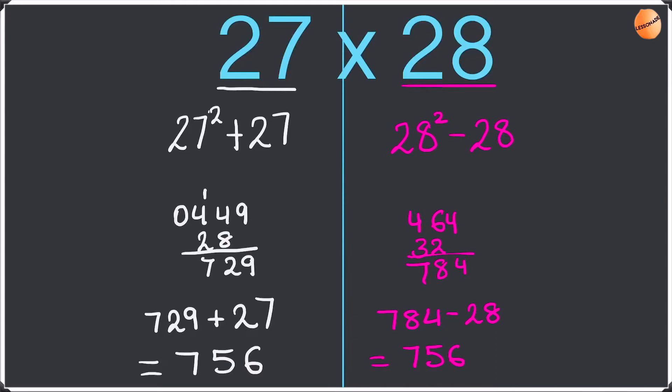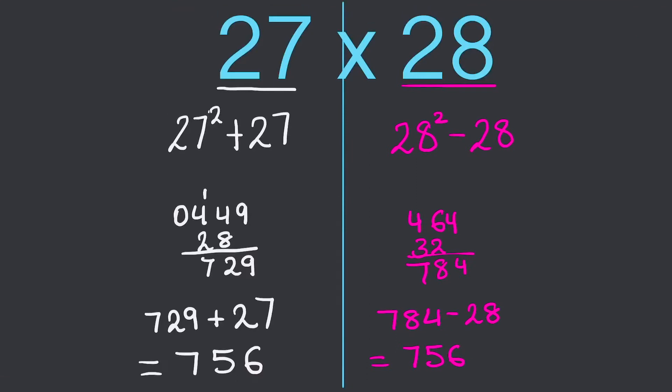So as you guys can see, you can use this method both ways. You guys can see which method you find the easiest and use that method — it's completely up to your choice. You can either use the smaller number or the larger number; whichever you find the easiest, use that method. Okay so now let's go on to our next example.